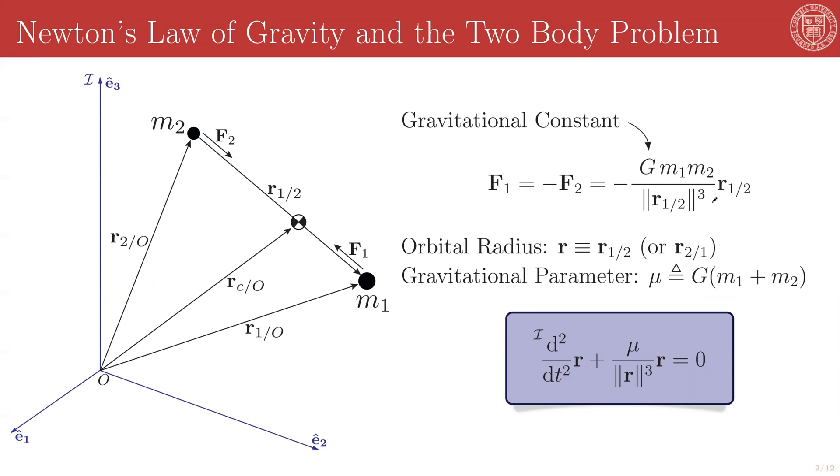If we define the orbital radius as the separation distance between the two masses, R1 rel2 or equivalently R2 rel1, and we define gravitational parameter mu equal to the gravitational constant times the sum of the two masses, then we will get to a differential equation of this form, and this is the governing differential equation of the two-body problem.